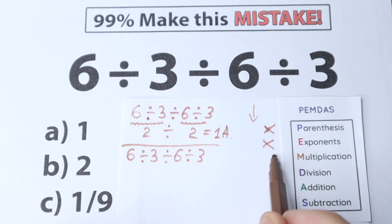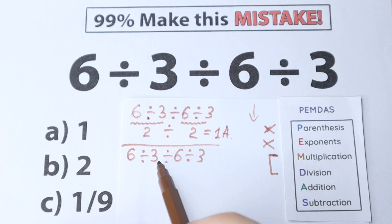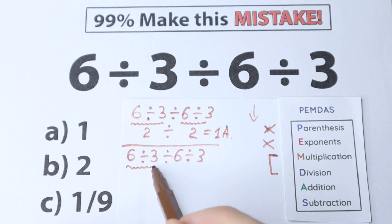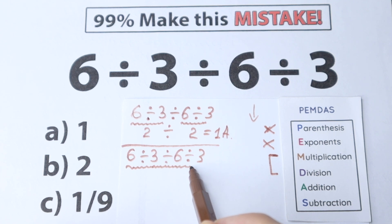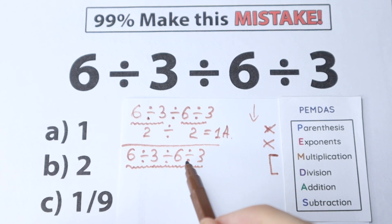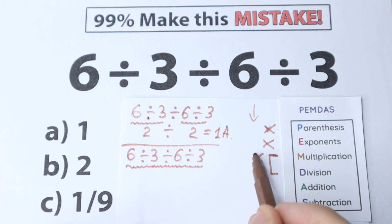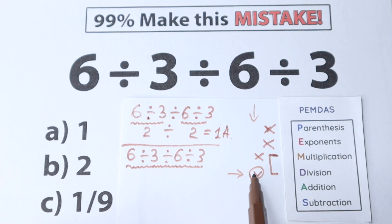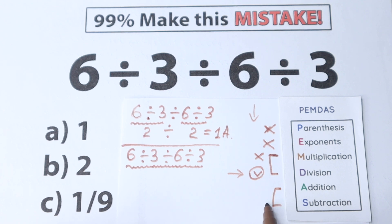The next step is the Multiplication and Division group. We need to find multiplication and division signs. Here we have a division sign, then another division sign, and another division sign. So we have division signs throughout — no multiplication signs at all. We also have no addition or subtraction signs. We have only division, which is our first step to solve this problem.